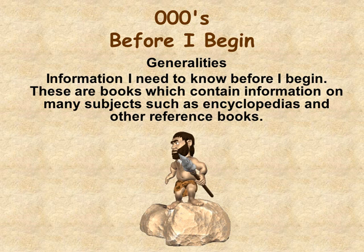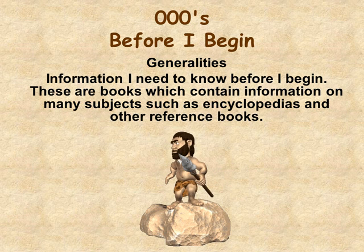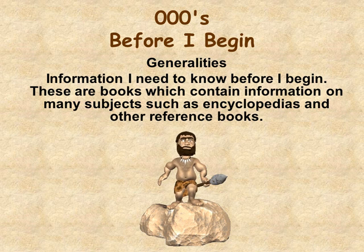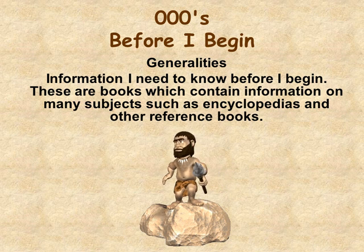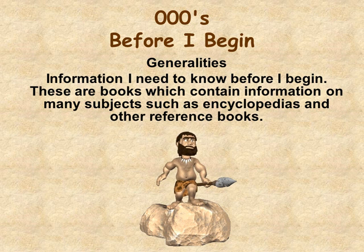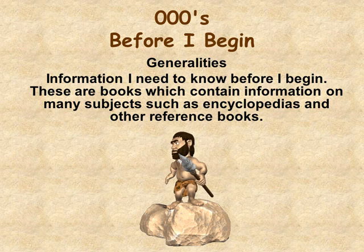First question: What do I need to know before I begin? These are general kinds of things — the kind of information that would be found in encyclopedias and other reference books. The books that answer these kinds of questions can be found in the 000s of the Dewey Decimal System.